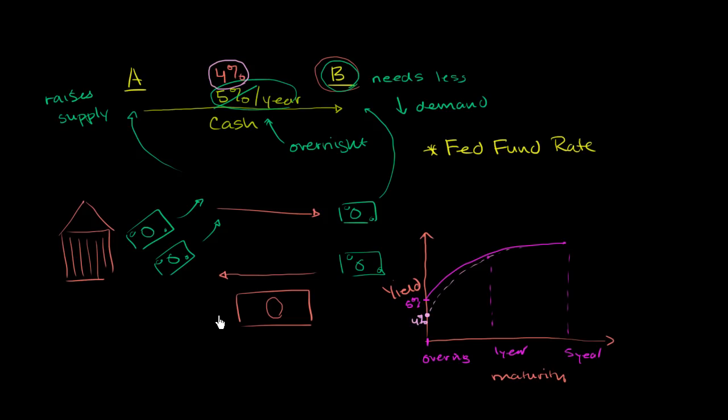The Fed buys treasury securities from the general market. This increases the amount of cash in circulation, which decreases the demand for cash, increases the supply, and should lower the interest rate. The Fed usually cares about getting that interest rate within a certain zone, around a certain target.